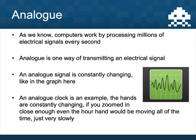To quickly recap the last lesson: computers work on electrical signals and are definitely electronic devices. There are two ways of transmitting electronic signals called analog and digital. An analog signal is constantly changing — the signal can be any value on the y-axis. An example of an analog device is a clock with hands; if you zoomed in close enough, the hand is constantly changing and even the hour hand is constantly moving just a little bit.